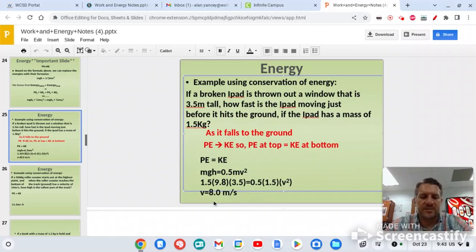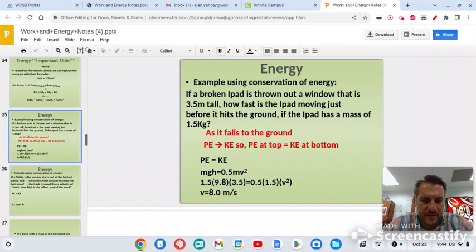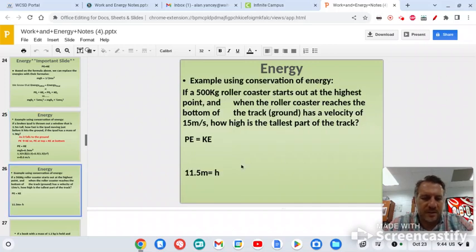So that's what we're going to be working on today, just plugging numbers in and using our algebra skills to show that kinetic and potential energy equal the same thing. I think this may be another example I could do on here. So yeah, here you go. So this is the one where if the 500-kilogram roller coaster starts out at the highest point, and when the roller coaster reaches the bottom of the track, it has a velocity of 15 meters per second, how high was the tallest point? So now we're just trying to find the height, and we're going to do all that stuff using the same idea here, and you get to a point where it equals 11.5 meters off the ground.